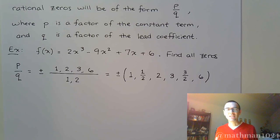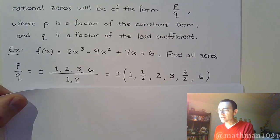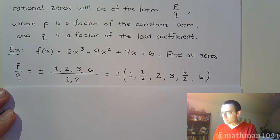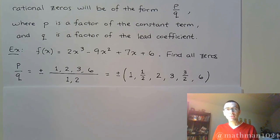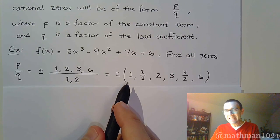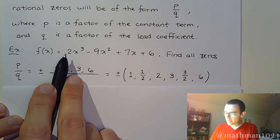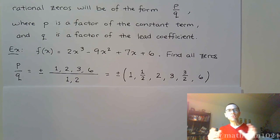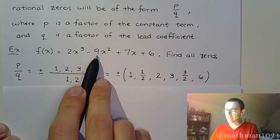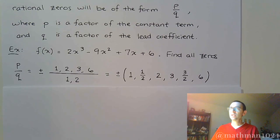So we're going to start testing these values to see which one works. The first ones you should try are the integer values — don't go to the fractions yet. For example, 1. The easy way to check if 1 is a zero is to take the coefficients and add them up. If the coefficients and constant term add up to zero, then x = 1 is a zero. But here: 2 minus 9 is negative 7, plus 7 is 0, plus 6 is 6, so that doesn't work.